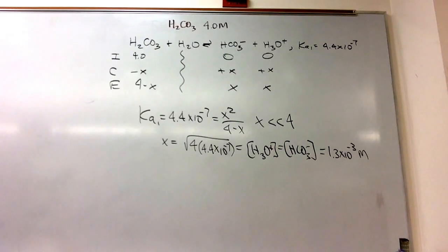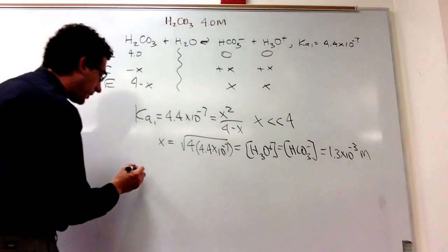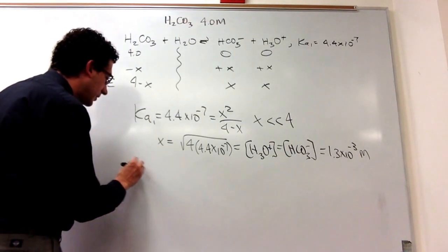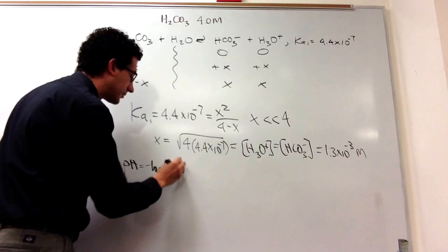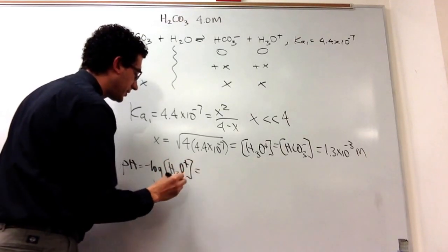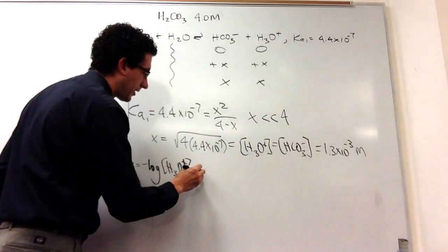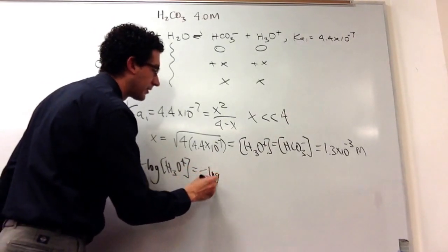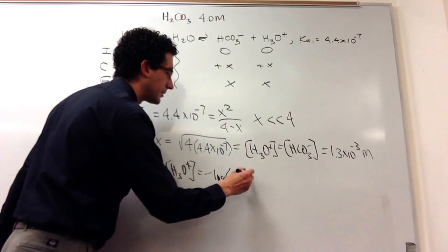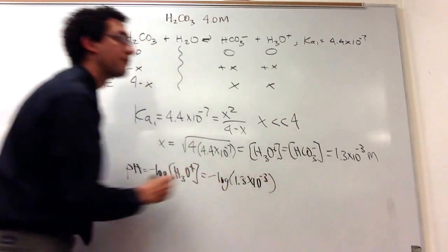So we've got those two concentrations. We can find the pH right now because we know H3O plus. pH is equal to negative log of the H3O plus concentration, which is equal to negative log of 1.3 times 10 to the minus 3.